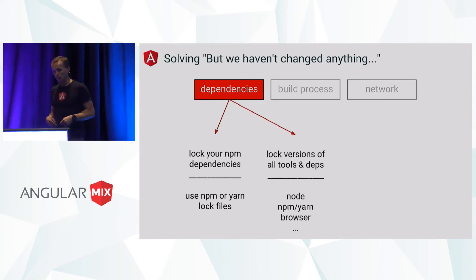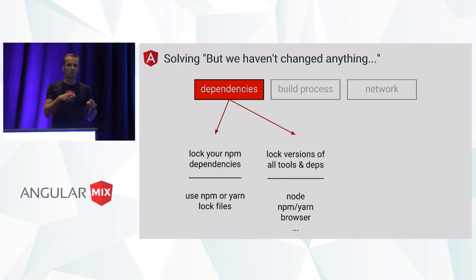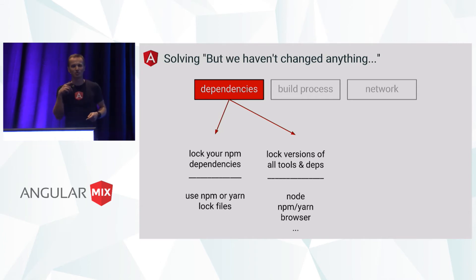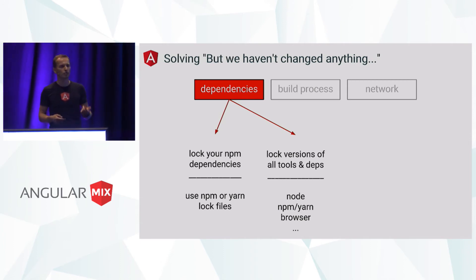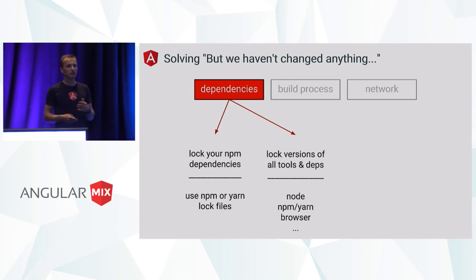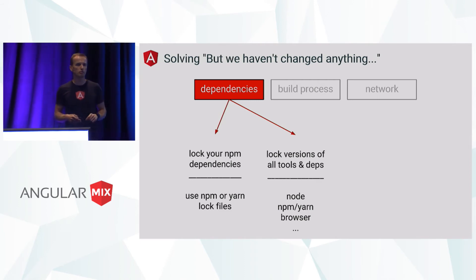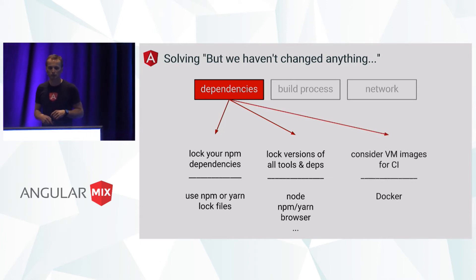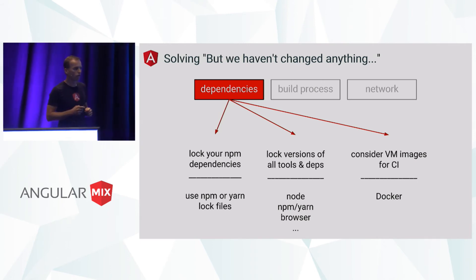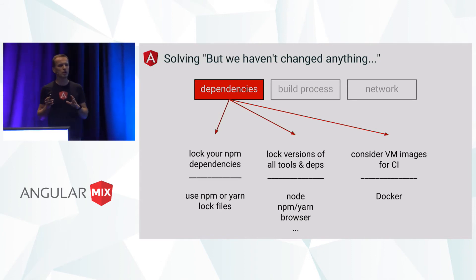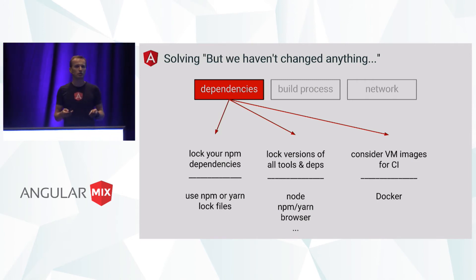The next source of dependencies we often don't think about: we use NPM to install dependencies, but who installs NPM and what version? This is something we should also think about and make sure the version of NPM itself is locked. The same is true for Node, for browsers you test against — anything that has a version number should be specified in your source control repository inside an install script. And lastly, if you are really feeling strongly about having control over all variables, you should consider using VM images, either for CI or even for local development. There will be a presentation on Docker, which is one of the ways how you can achieve this.